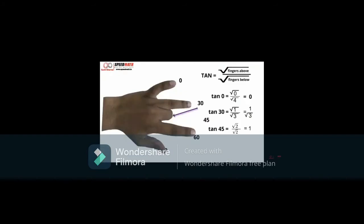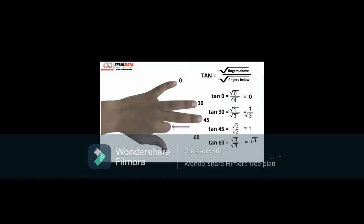Now let's find tan 45. We can see that above and below the middle finger, there are 2 fingers each. So tan 45 is equal to root of 2 by root of 2, which is 1. Now we can find tan 60. We can see that above index finger, there are 3 fingers and below there is 1 finger. Now tan of 60 will be root of 3 by root of 1, that is root of 3.